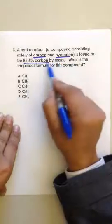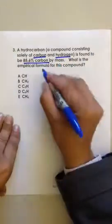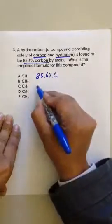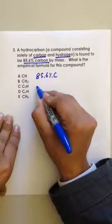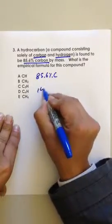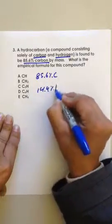All you need is the weight by mass, and what the process is, is if I have 85.6% carbon, what's the other percentage of hydrogen? Well, it should be 100 minus that, which is 14.4% hydrogen.